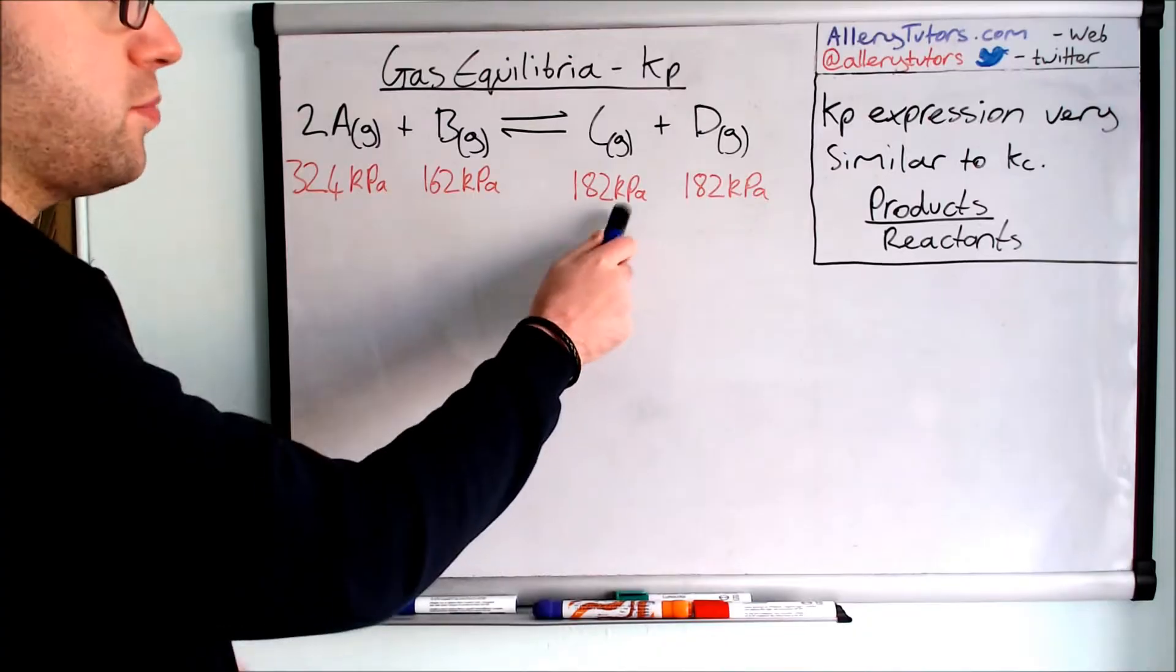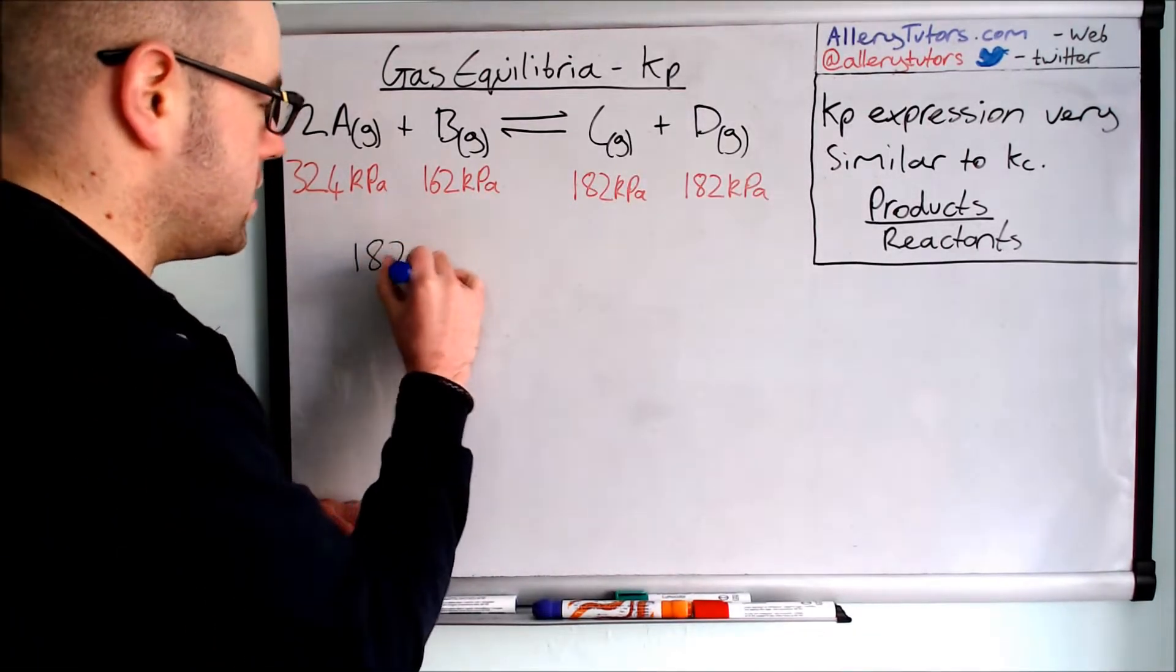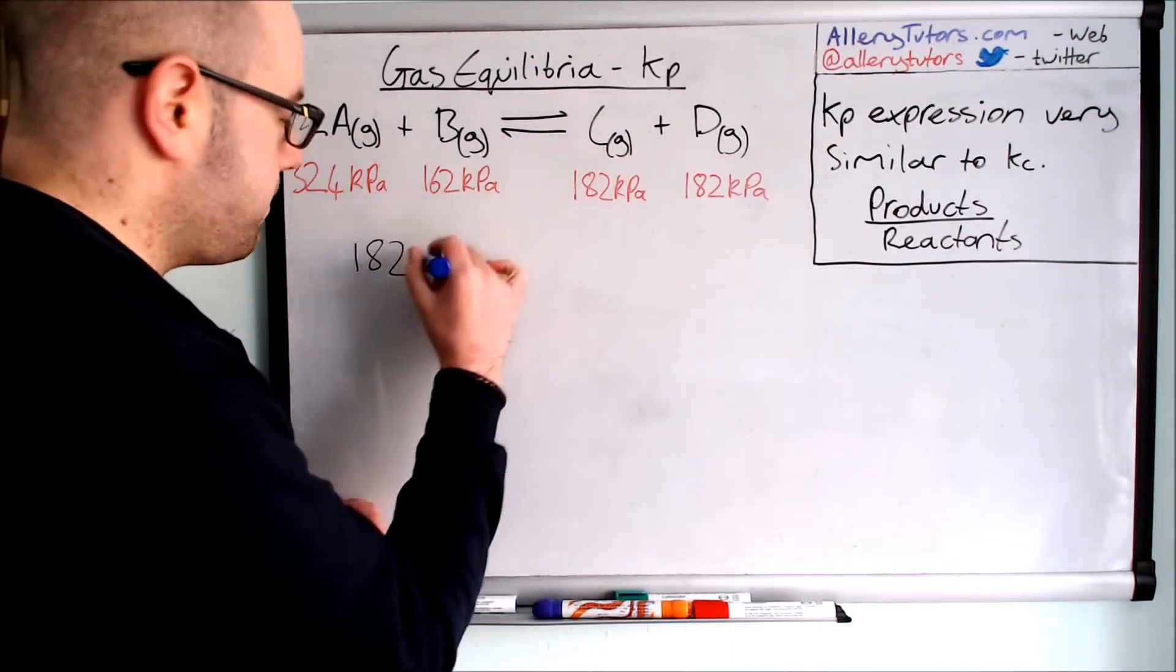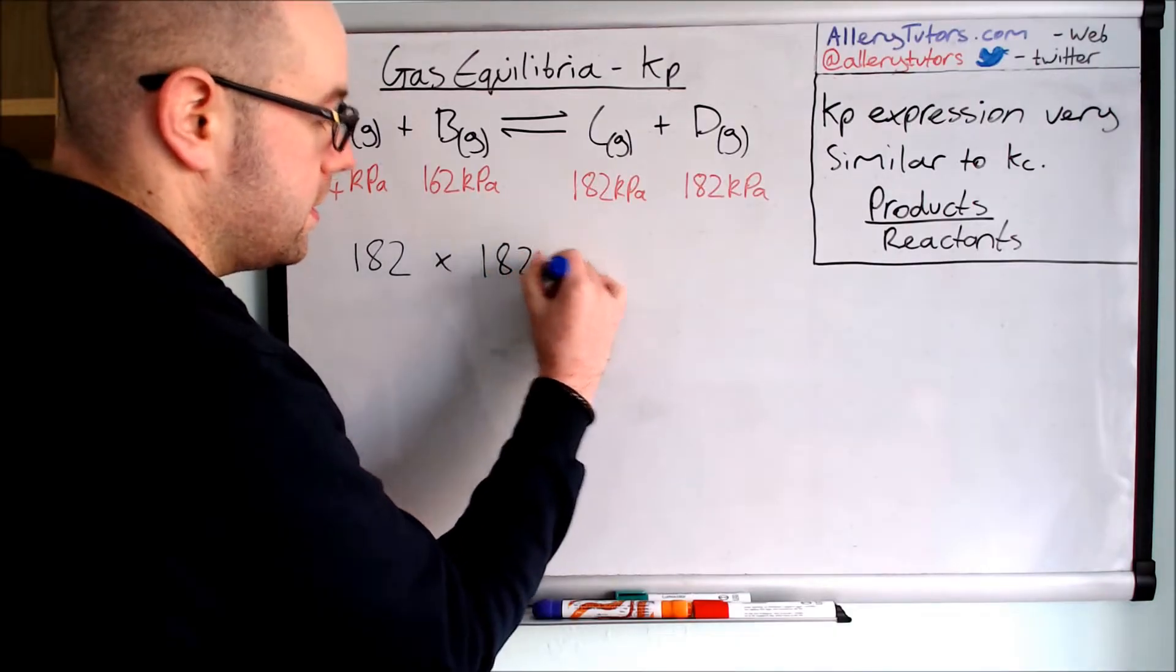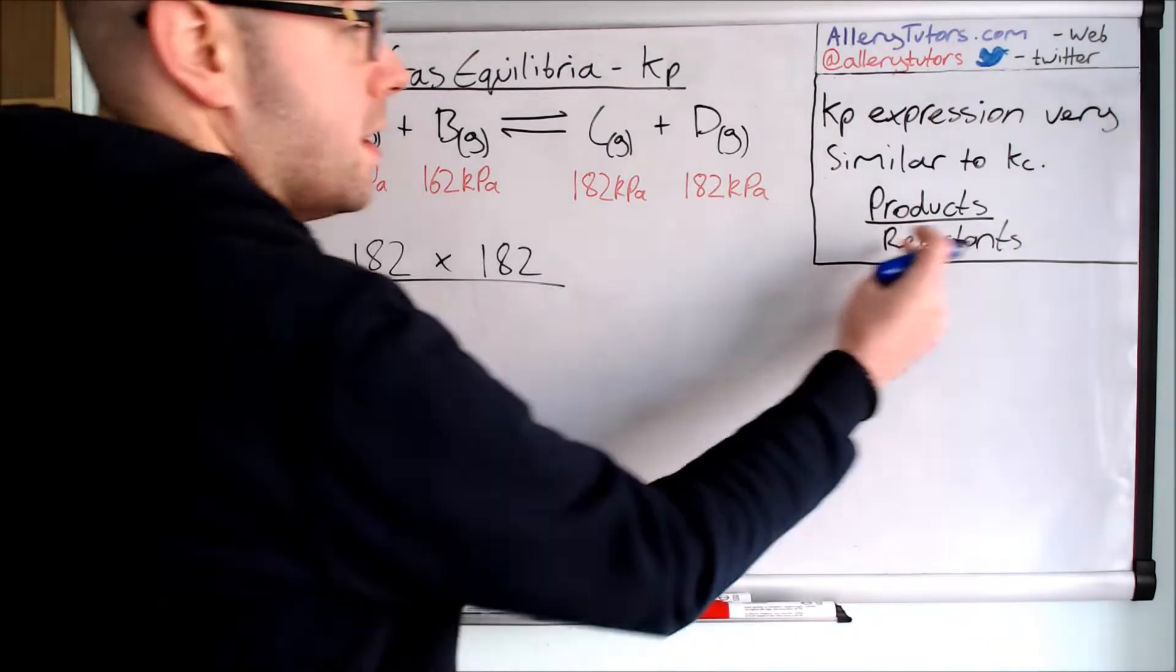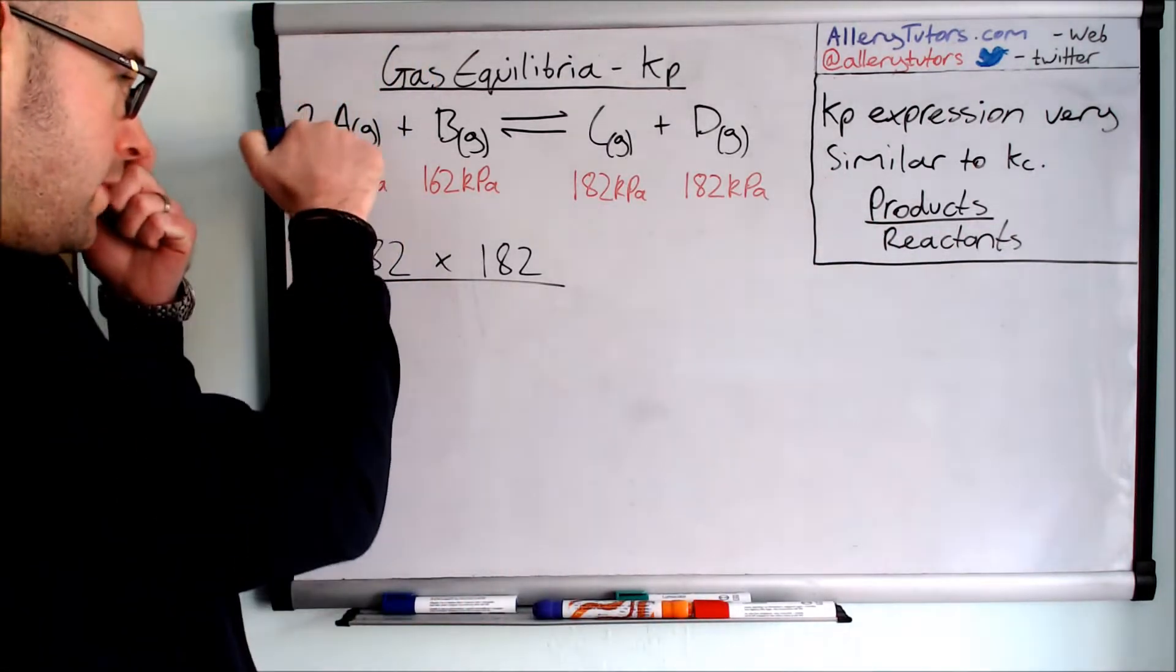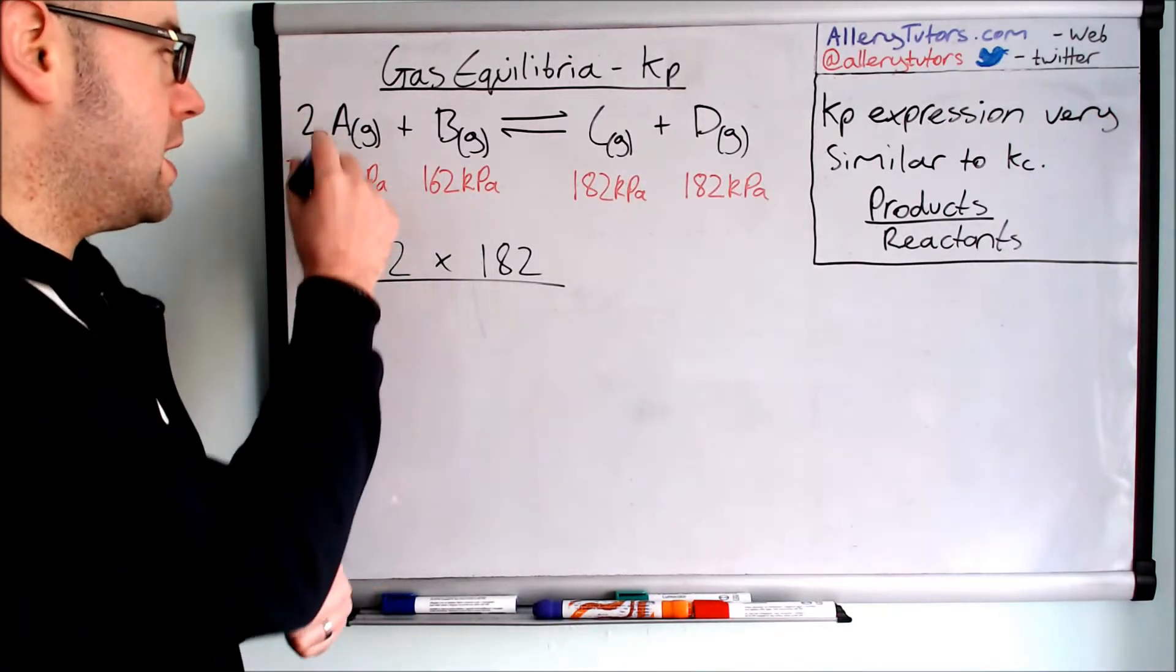So we're going to start with our products. Here's our products over here and so this is going to be effectively 182 for the number of moles of C and then 182 for D as well. So we'll have the products on the top and then we're going to divide that by all our partial pressures for our reactants and you can see here that we've actually got two in front of the A. That means we have to square this number here.